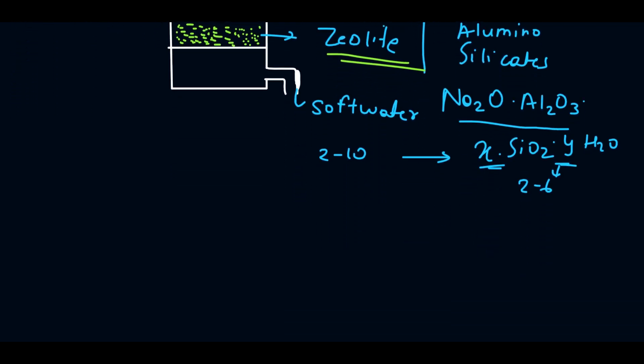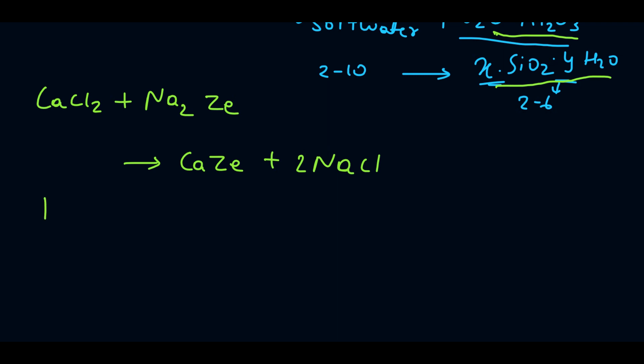CaCl2 plus Na2Ze, where Ze denotes all these parts. CaCl2, which is calcium permanent hardness, plus Na2Ze, the zeolite, gives us CaZe plus NaCl. For magnesium hardness, MgCl2 plus Na2Ze gives us MgZe plus NaCl.